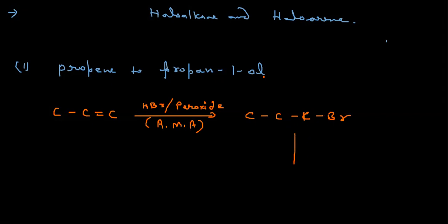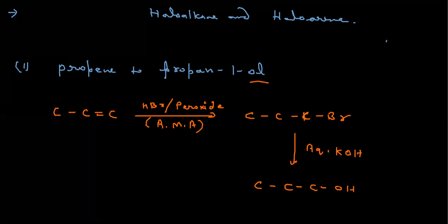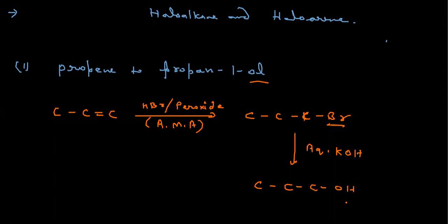Now you want to convert into 1-ol, so bromine is converted with the help of OH — Br is substituted by OH. We take aqueous KOH, so from aqueous KOH your alcohol comes. Br is getting replaced by OH. Whenever you take aqueous KOH, OH is coming; whenever you take alcoholic KOH, a double bond is coming — always remember that. This is the first conversion, important for the exam.